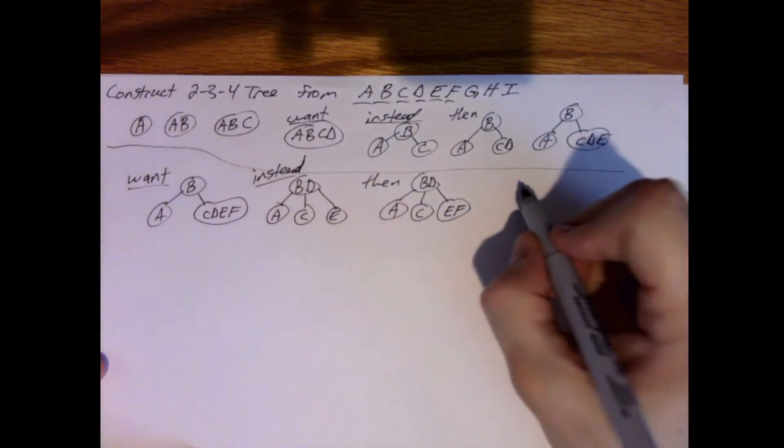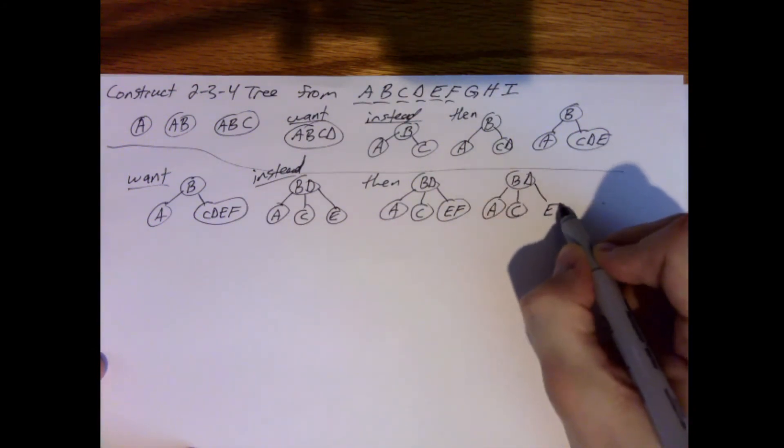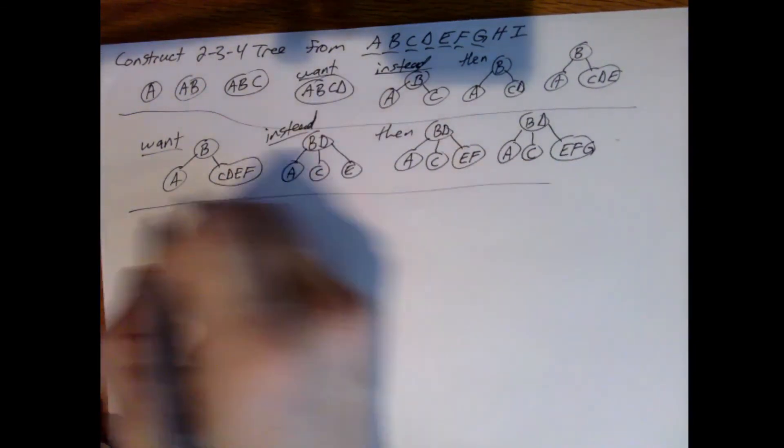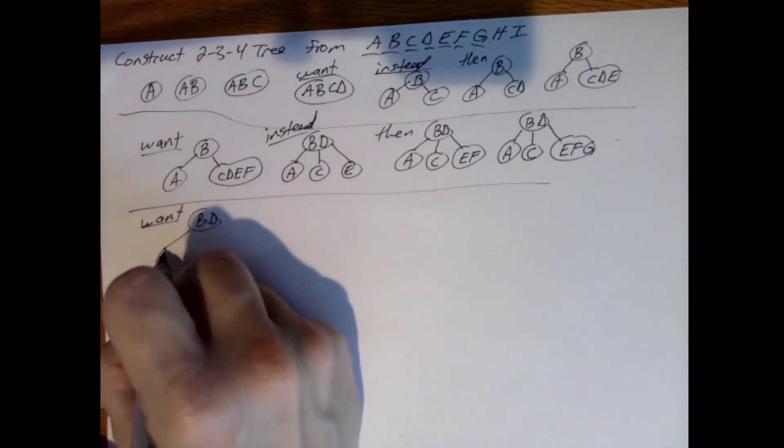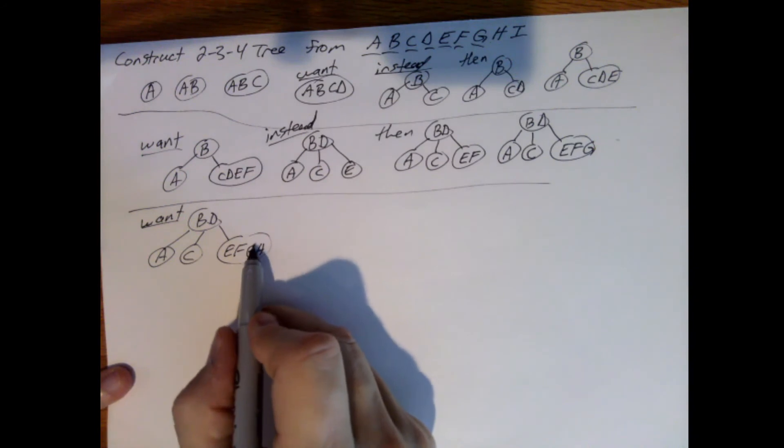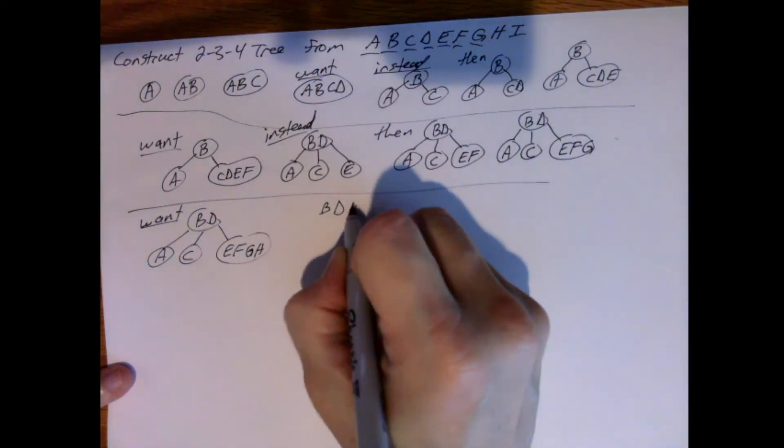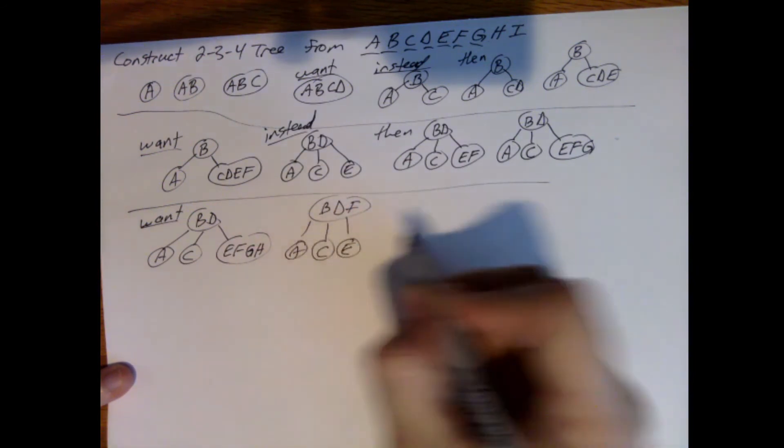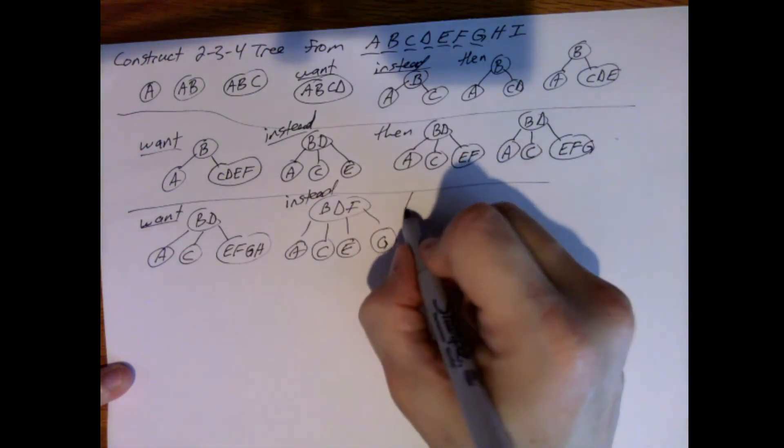What about G? E, F, G, H. So here's what we want: E, F, G, H. Too many keys. So instead, I need to split on the F. So B, D, F. A is here, C is here, E is here. And then add the H.